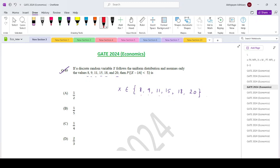How many observations are there? 6. So each of them have a 1 by 6 probability of occurring. Okay, so this is your probability mass function.